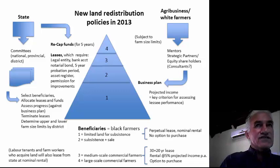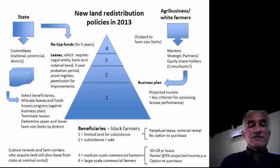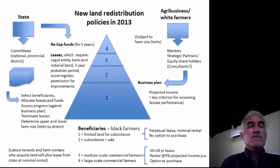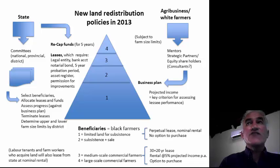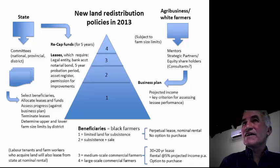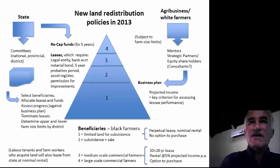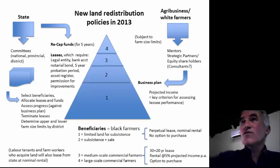Government divides beneficiaries into four categories. Categories one and two are black farmers using limited land for subsistence or some sale of produce — for these, the land will always remain a lease and never transfer to ownership. Categories three and four — medium and large-scale commercial farmers — can get ownership after 50 years of following government's recommendations. This is a very paternalistic system that gives almost no freedom of manoeuvre to farmers themselves. Government will decide for them, and can end the lease and remove them when they fail to meet income targets.